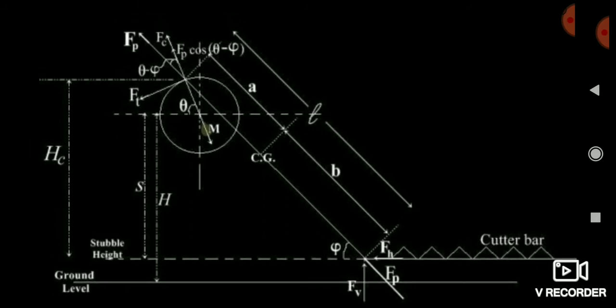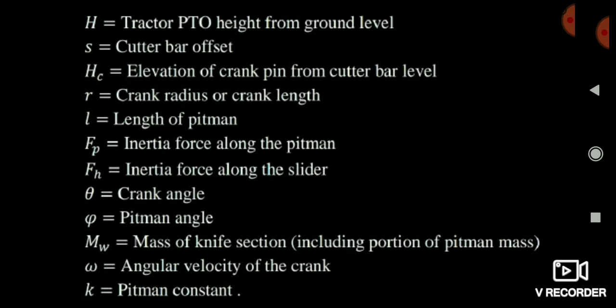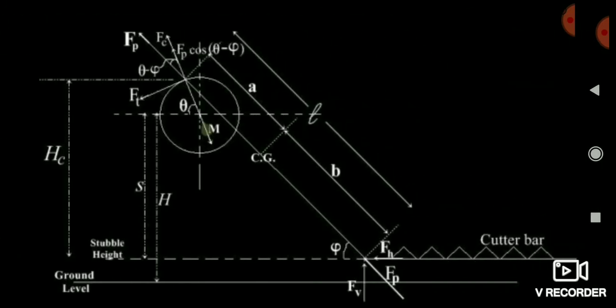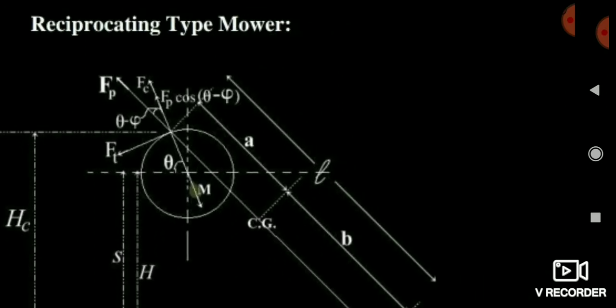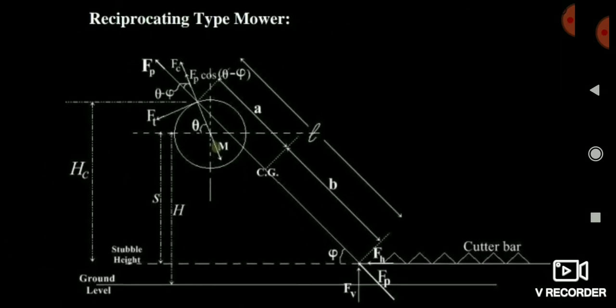Another angle present here is theta — theta is the crank angle. By geometry, you can conclude that the angle between Fp and the horizontal is theta minus phi. That is very important because it is very useful in solving the questions.